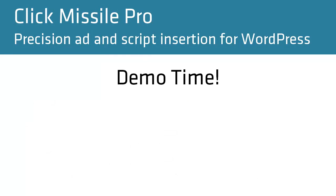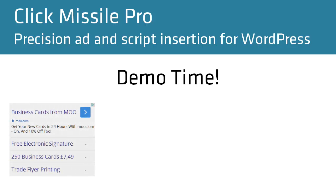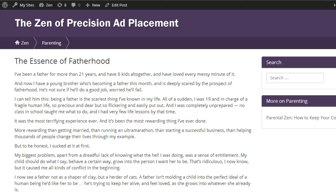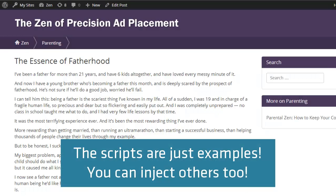In this demo I'm going to just scratch the surface of some of the things that Click Missile can do. Right now I'm going to inject an AdSense ad, a JVZoo button, and an Aweber mailing list signup form directly into the content of this page — exactly where I want them, super quick, super easy. The scripts I've chosen are just examples; you can inject just about any script or HTML snippet that you want.